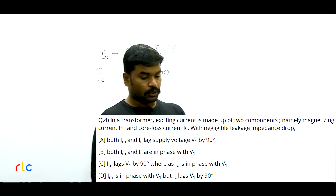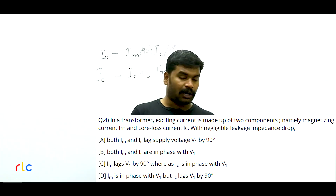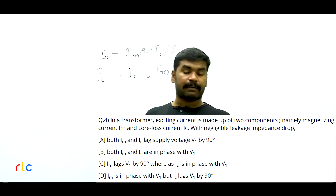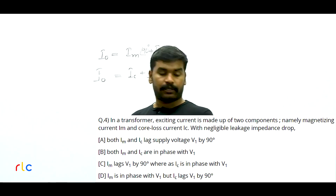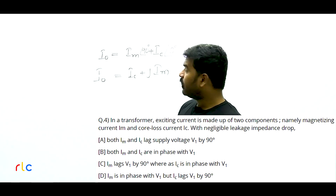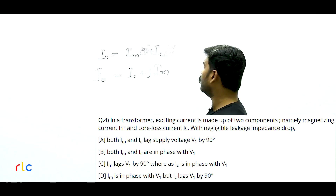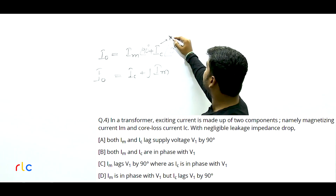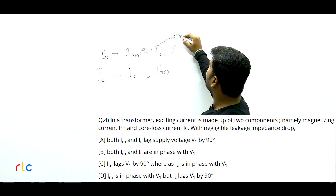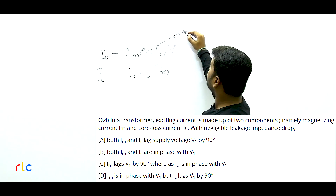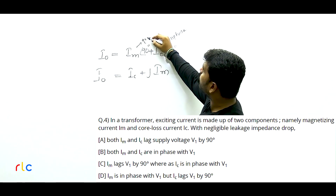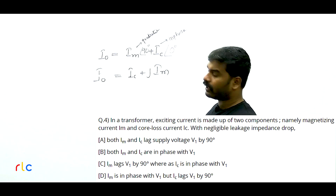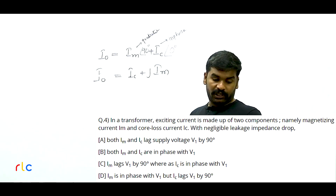This proves that per unit resistance, reactance, and impedance are the same on both HV and LV sides of a transformer. The actual ohmic values differ because of different physical winding dimensions, but per unit values remain constant. So the answer is Option A — 0.02, because the per unit resistance on the HV side is the same as on the LV side.